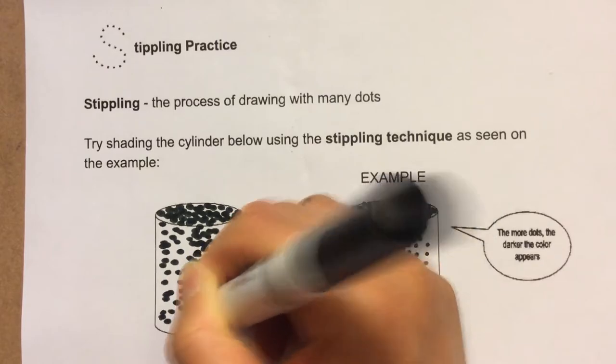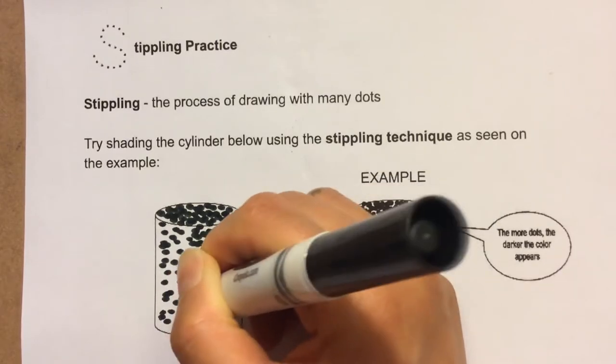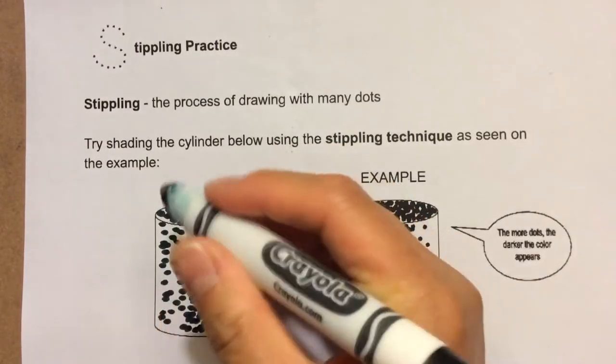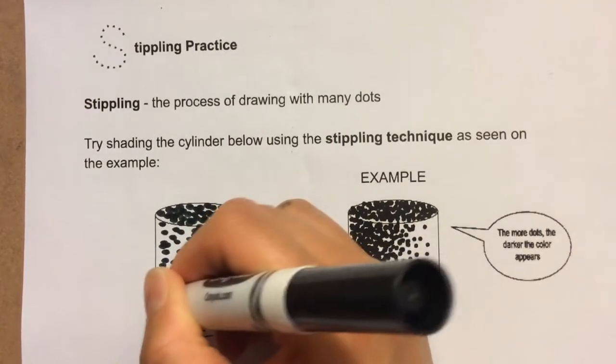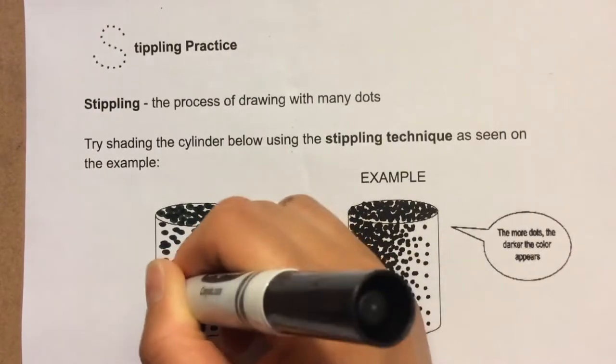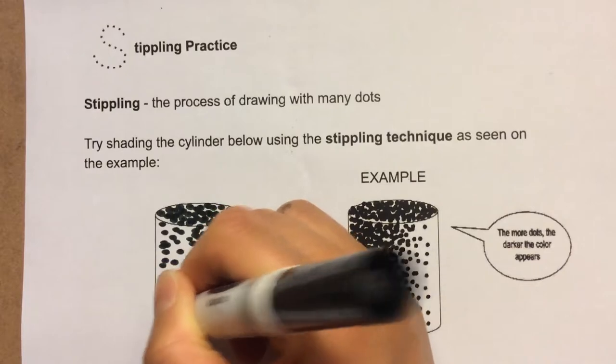And then on this far side right here, the light is turning away the most. So we're going to see most of the shadow here.